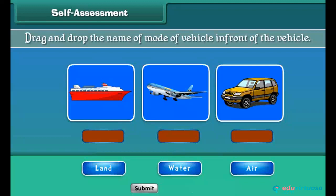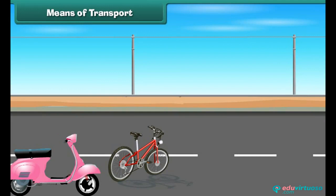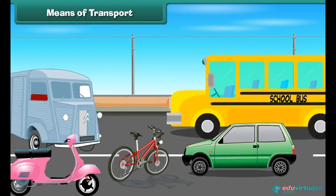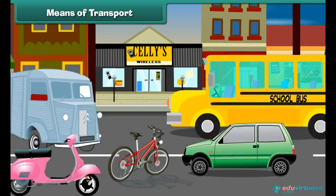Let's check your understanding of the topic. On the screen, you can see some vehicles and the name of their modes through which they run. Drag and drop the name of the mode of the vehicle in front of the vehicle. Bicycles, scooters, cars, trucks and buses run on roadways.